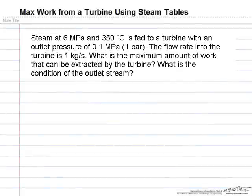This screencast shows how to calculate the maximum amount of work that can be extracted from a steam turbine using tabulated values of enthalpy from the steam tables.